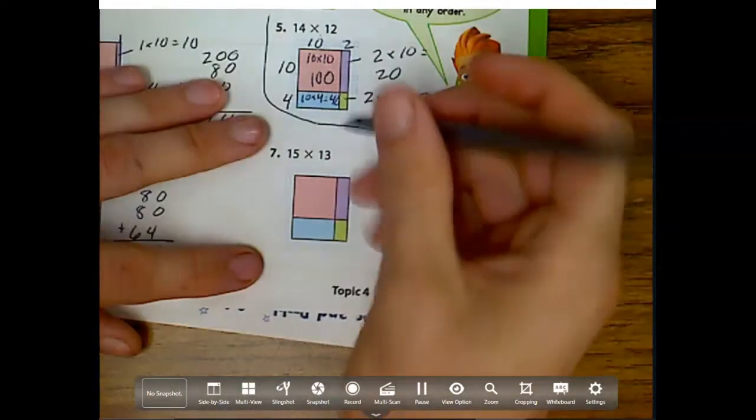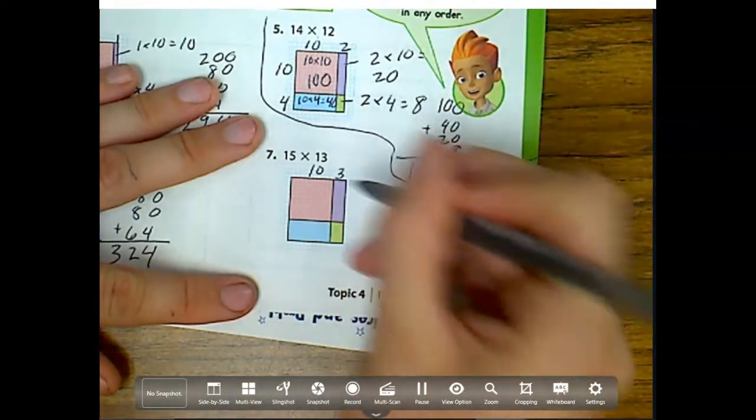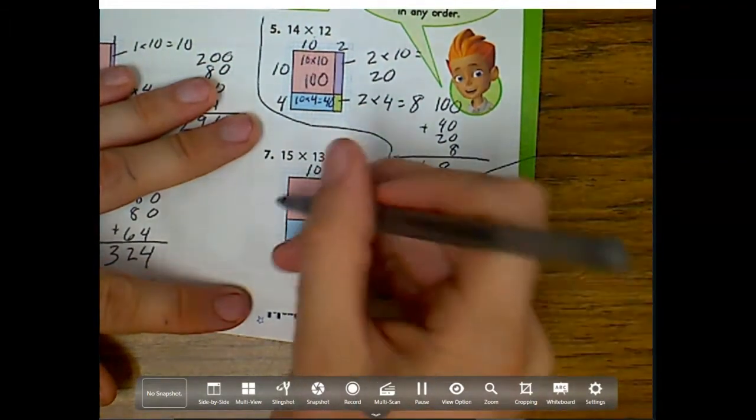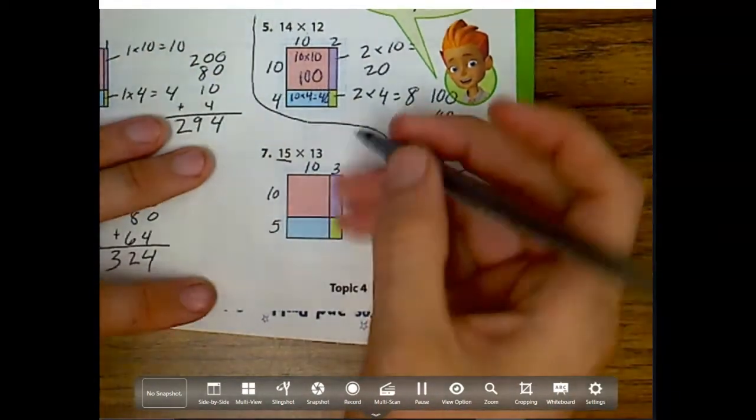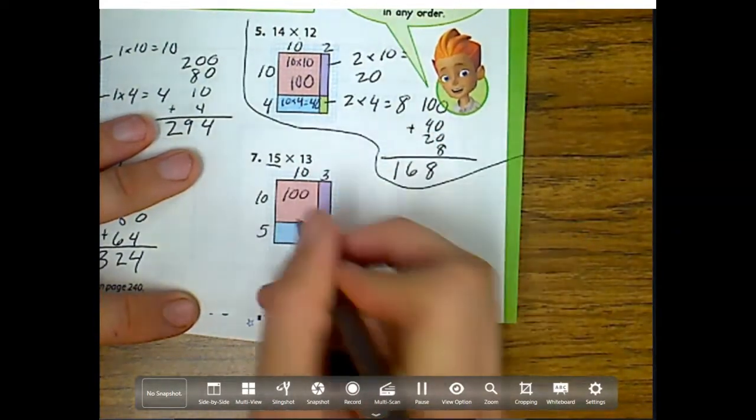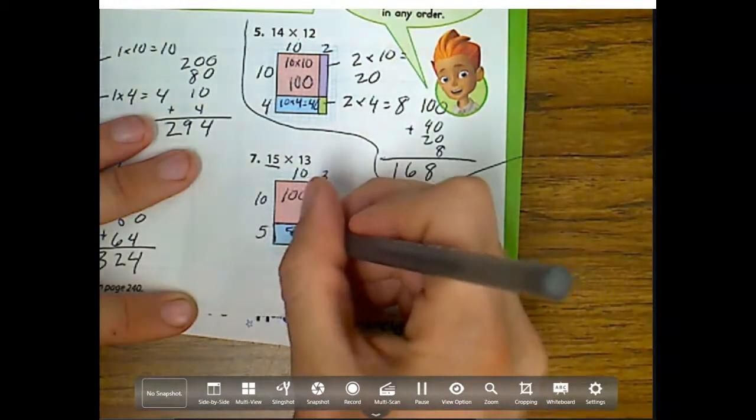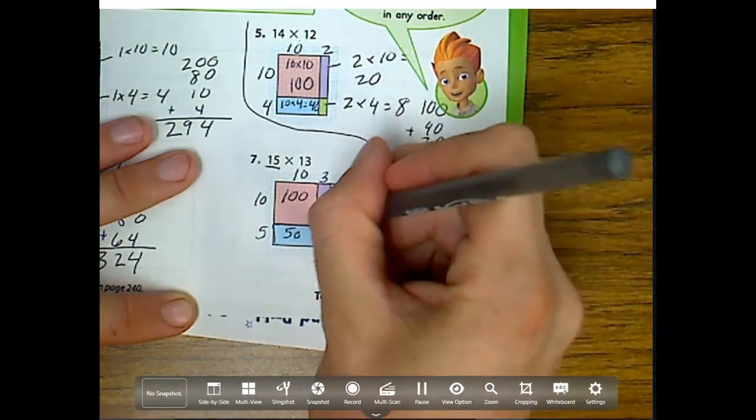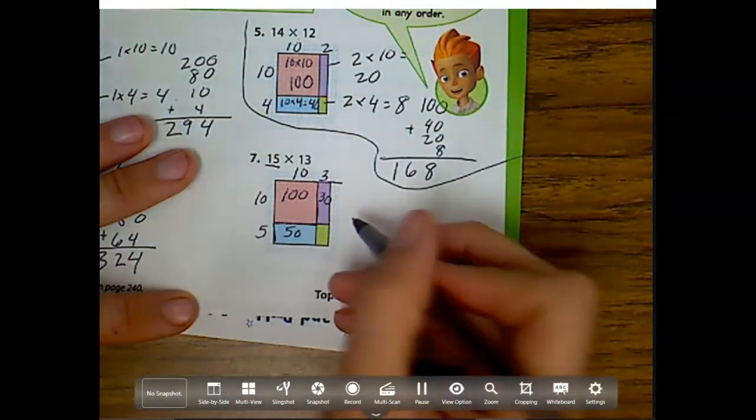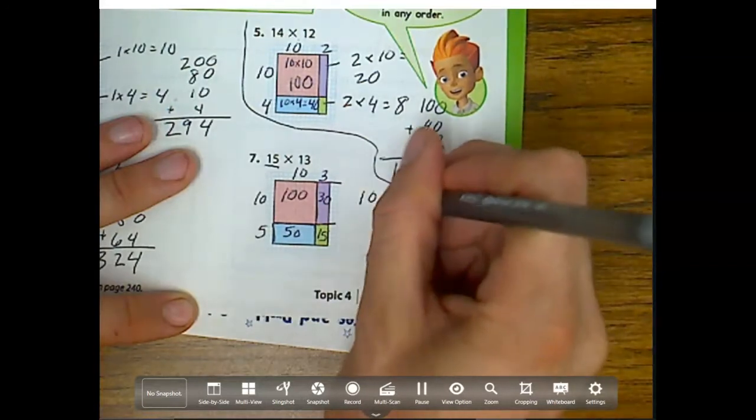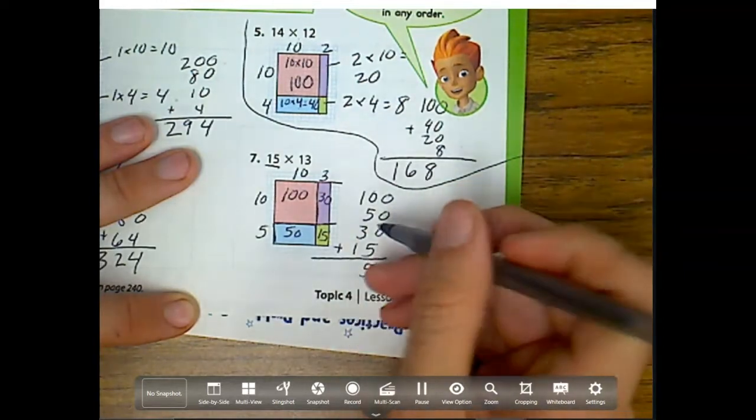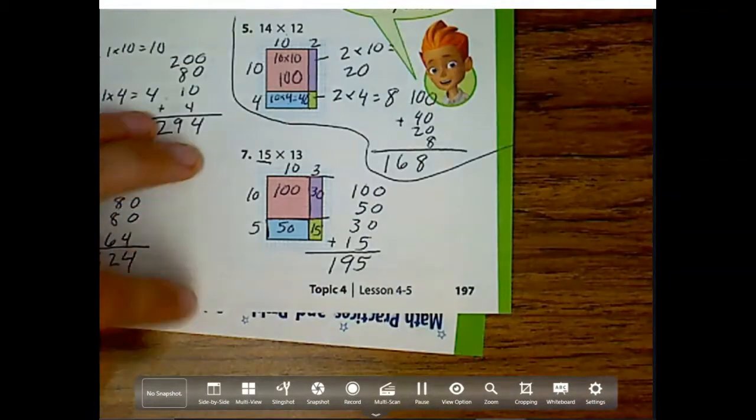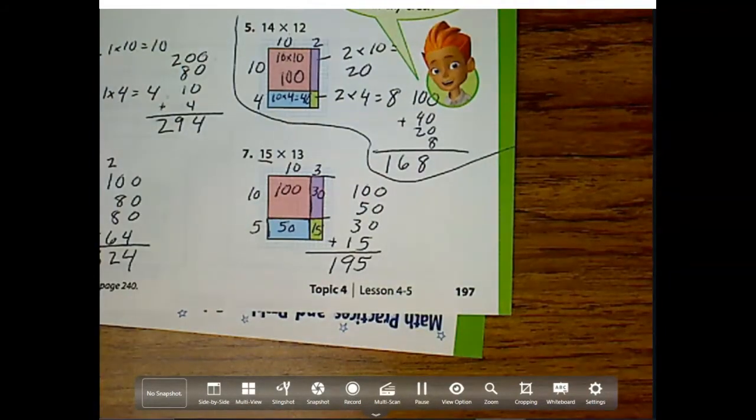Okay, my last one, 15 times 13. This is 10, this is 3 because there's 3 rows. This one is 10, this one's 5, that 15 number is 10 plus 5 is 15. Now what do we have? 10 times 10 is 100, 10 times 5 is 50, 3 times 10 is 30, and my last one, 3 times 5 is 15. So I have 100 plus 50 plus 30 plus 15. So this is 8 plus 1 is 9, so my answer is 195 for 15 times 13. So I think we got the hang of it, so let's go to our next page on the back.